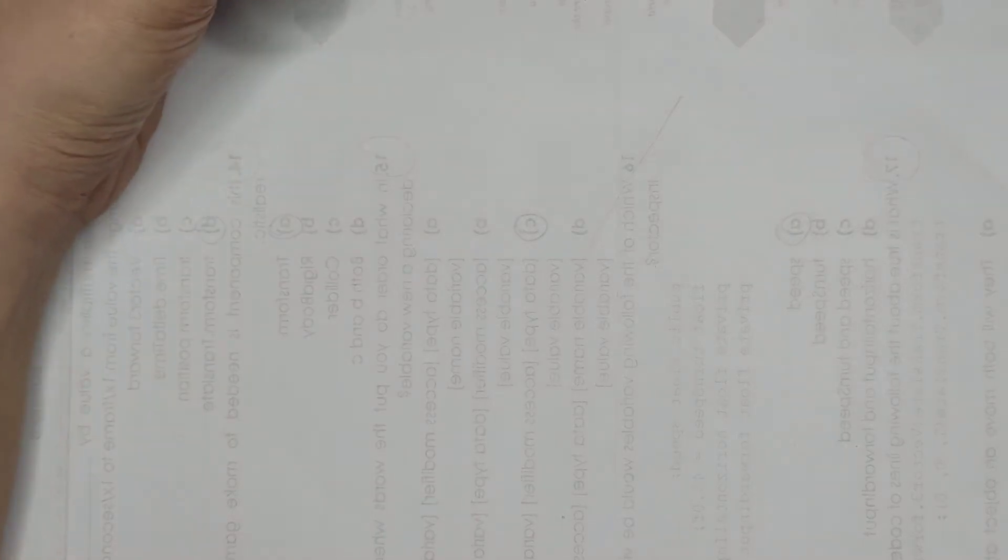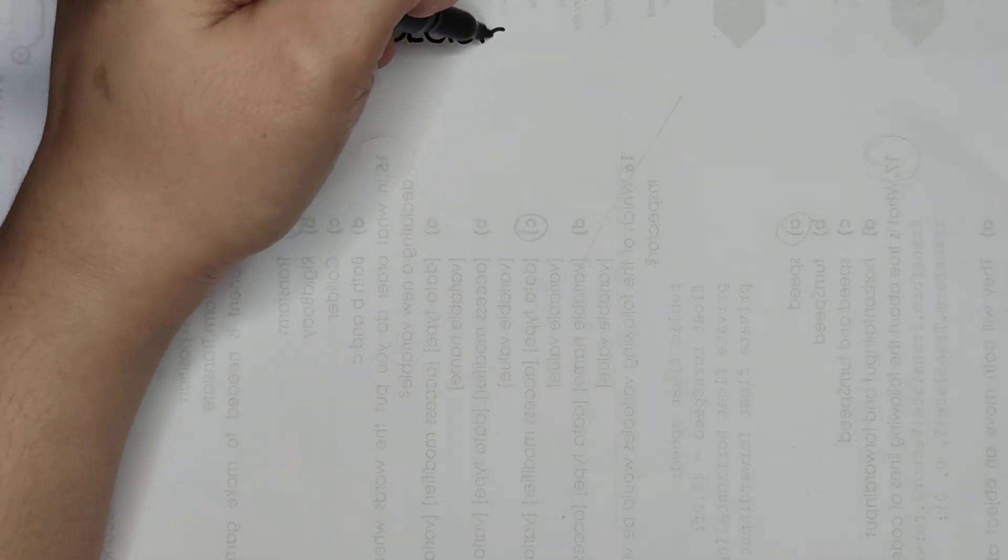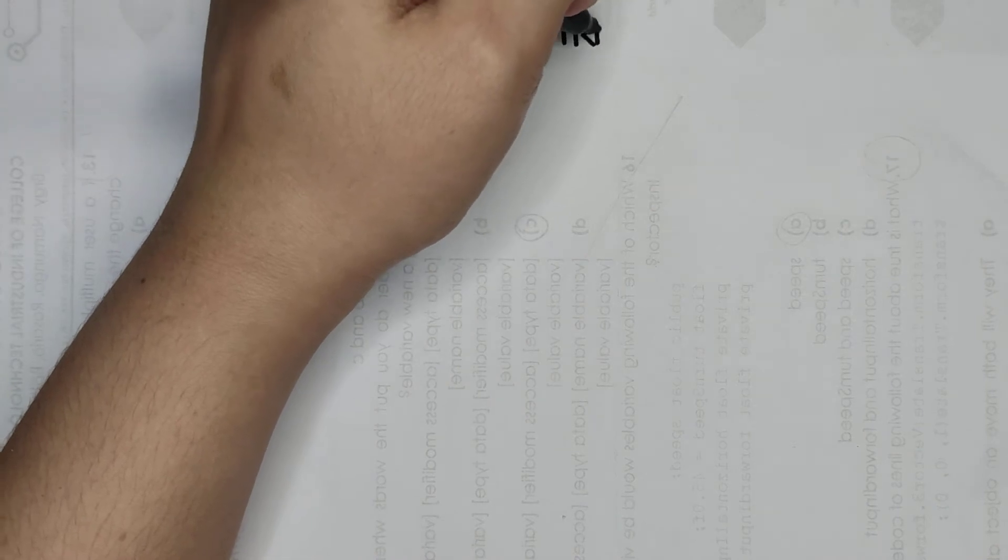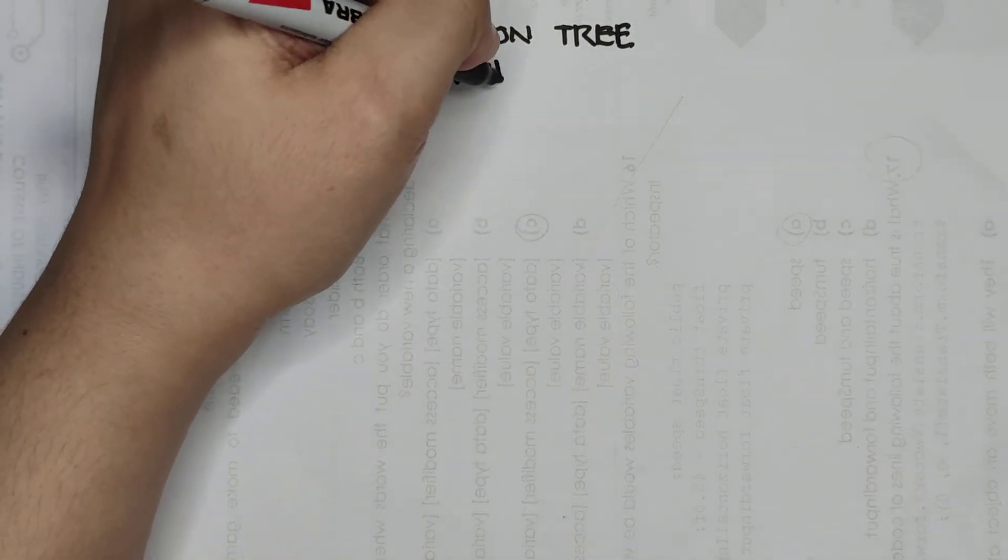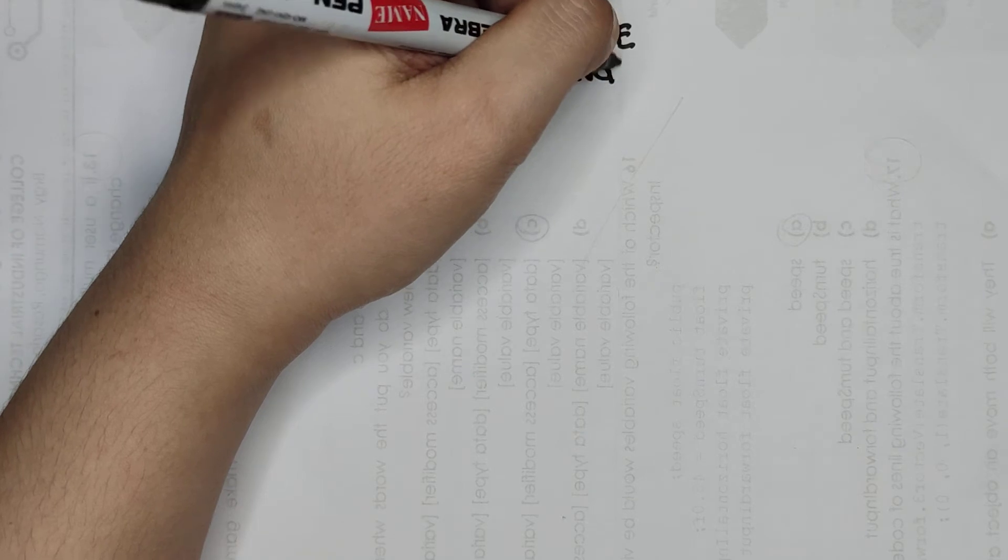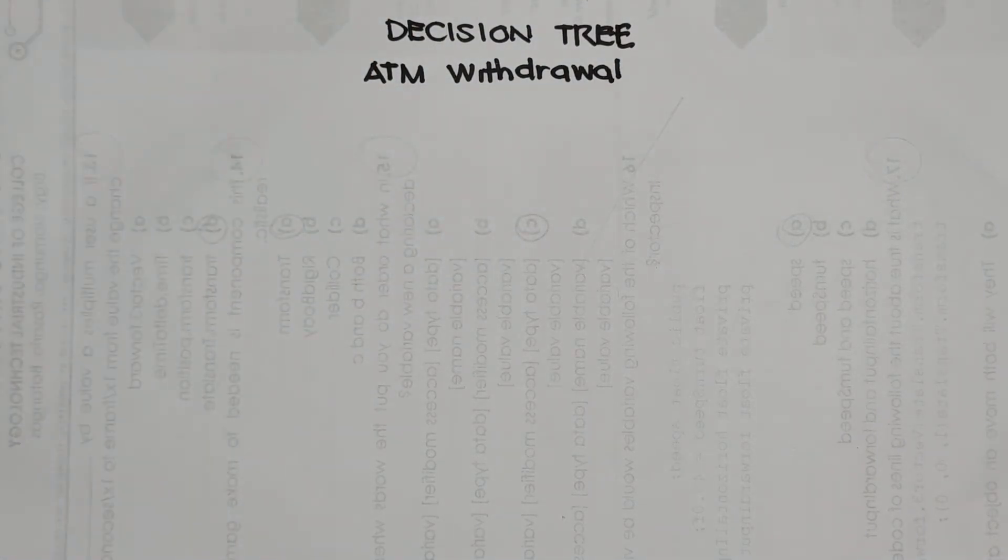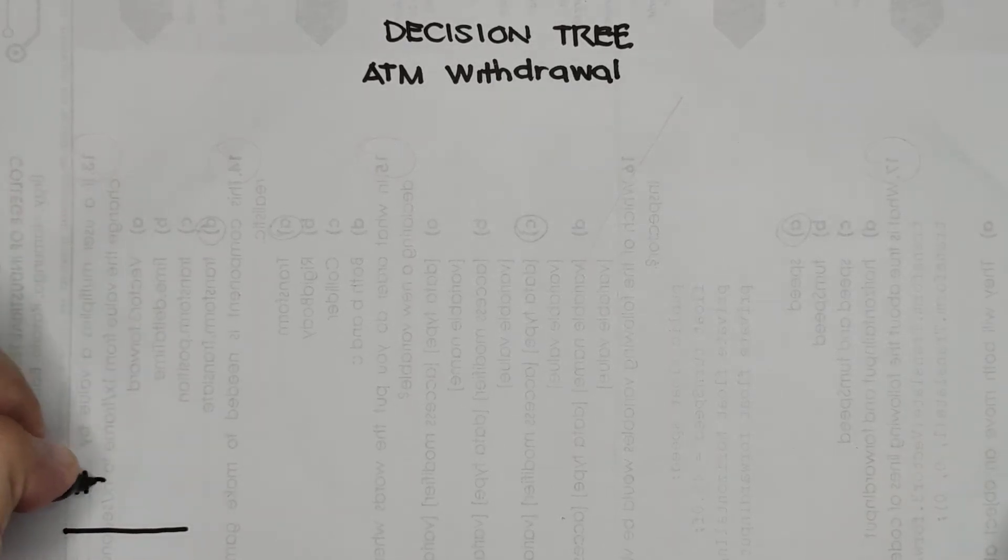For you to understand how it is used, let's have a context, for example, of an ATM withdrawal. We're going to use a decision tree. So we have decision tree and our example is ATM withdrawal. How are we going to withdraw money from an ATM? First, we will have a question: has ATM card?